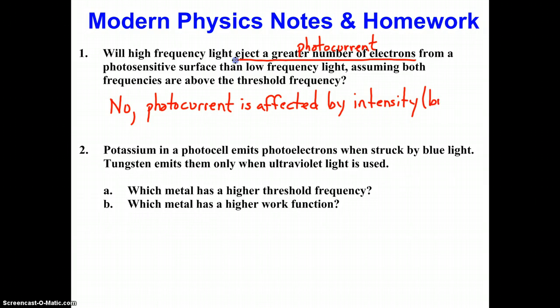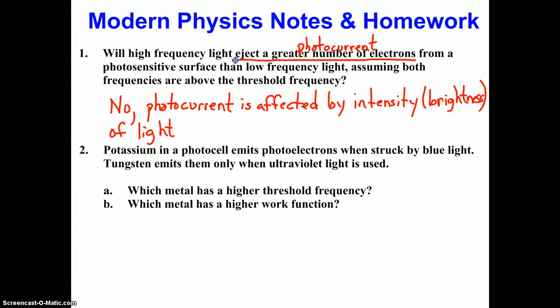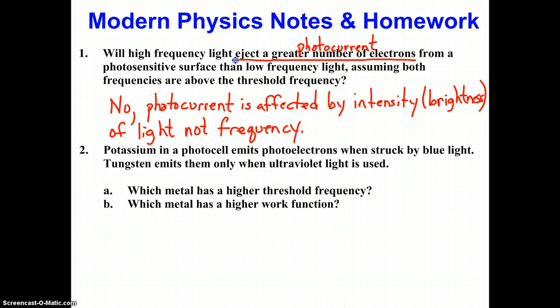Remember the other word we used for that was brightness of light, not frequency. This is one of the really important conclusions drawn by the photoelectric experiments: photocurrent was only affected by the brightness of the light shining on the metal, not by the frequency. So this is kind of a trick question. The answer is neither — neither will impact it because it's only affected by brightness.